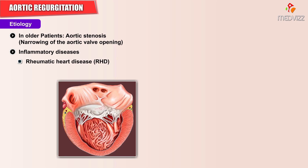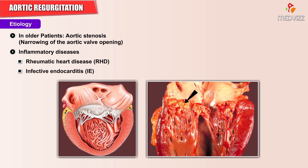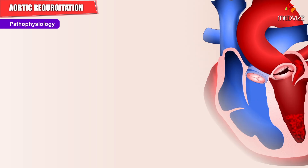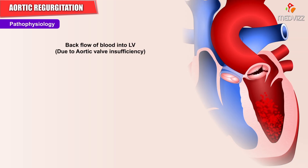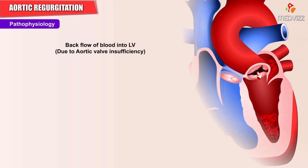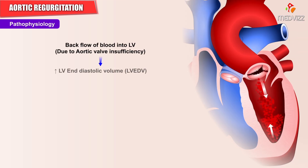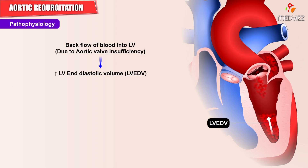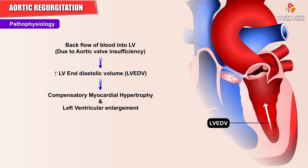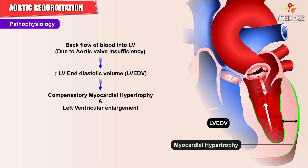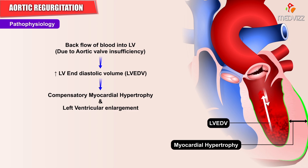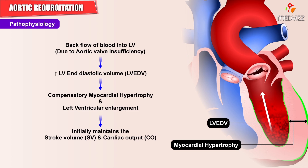Aortic regurgitation can also be seen with certain inflammatory conditions like rheumatic heart disease and infective endocarditis. Due to the insufficiency in aortic regurgitation, the backflow of blood results in increased left ventricular end-diastolic volume, which results in compensatory myocardial hypertrophy and ventricular enlargement.